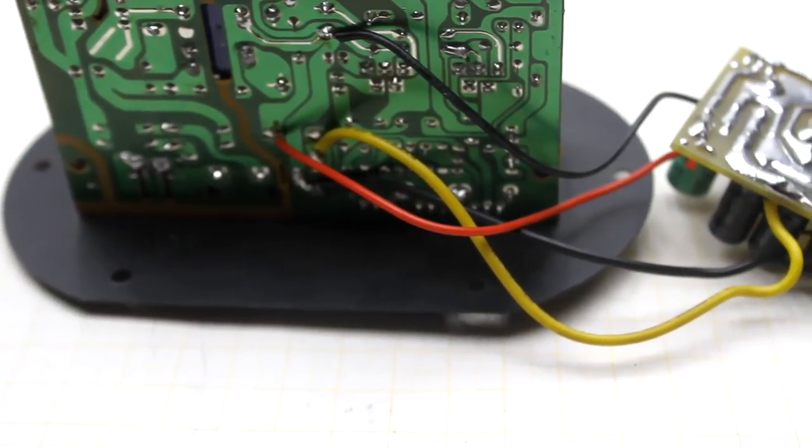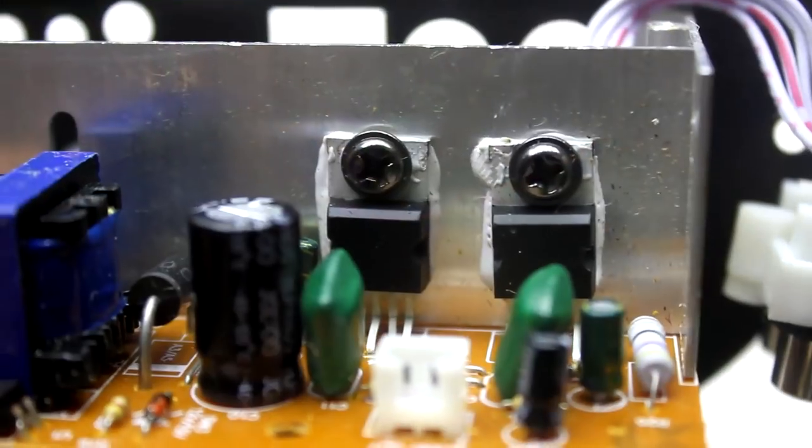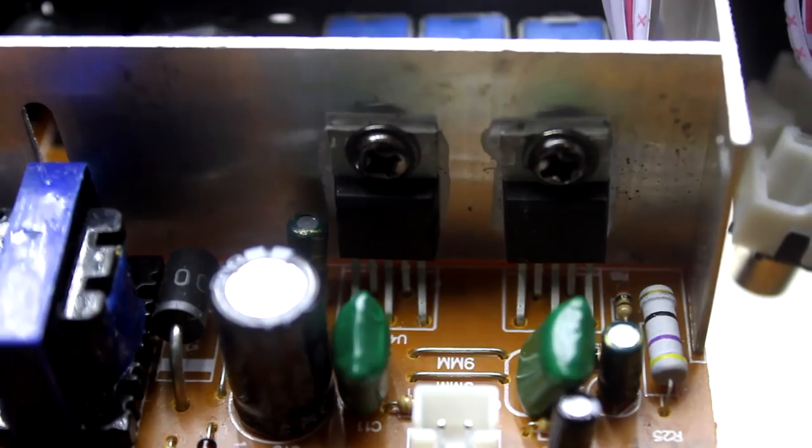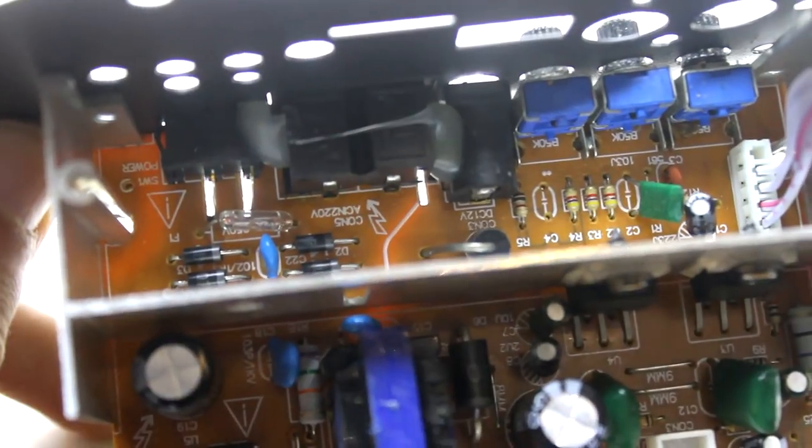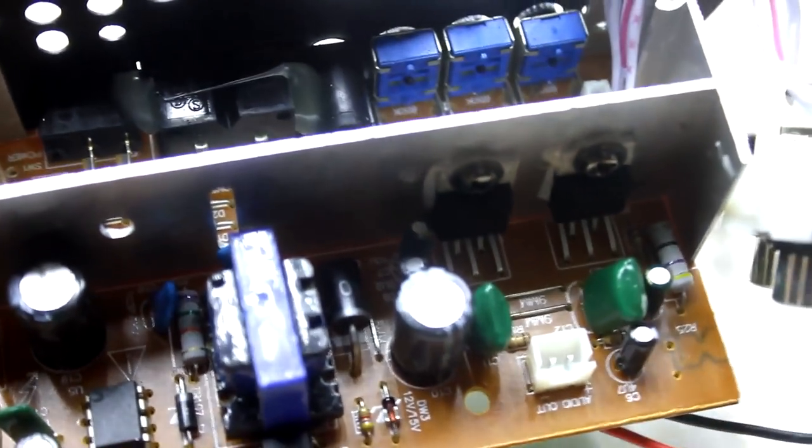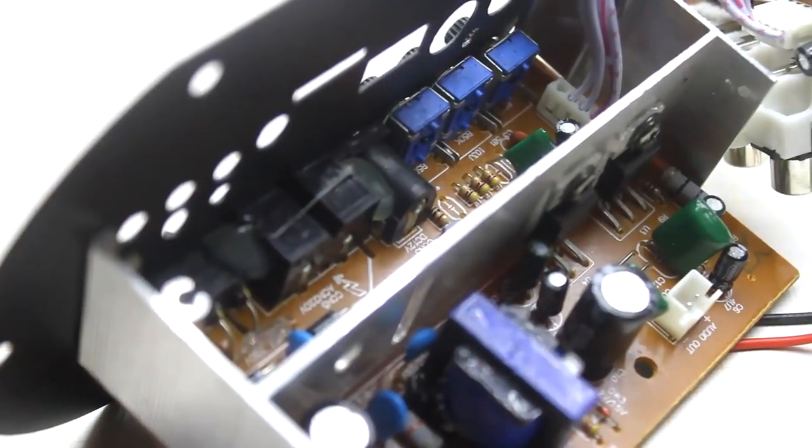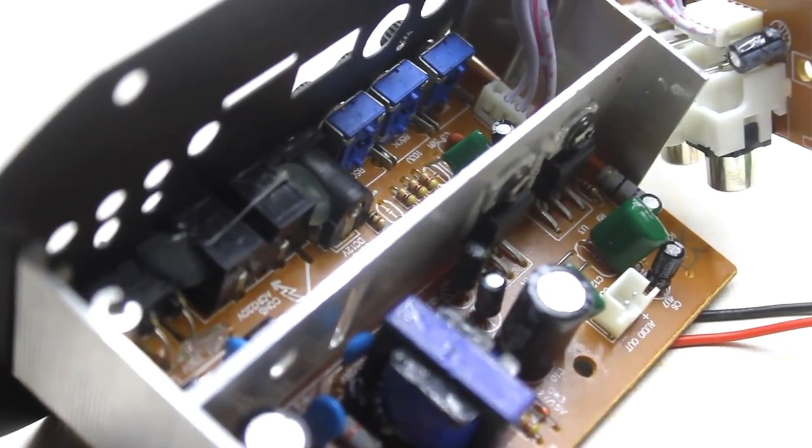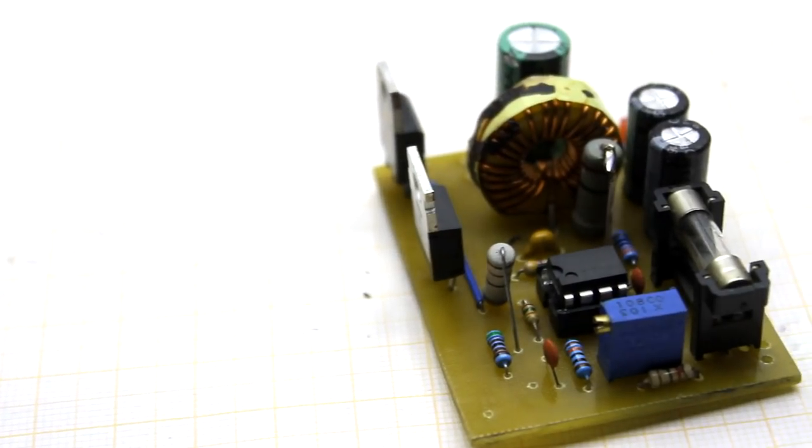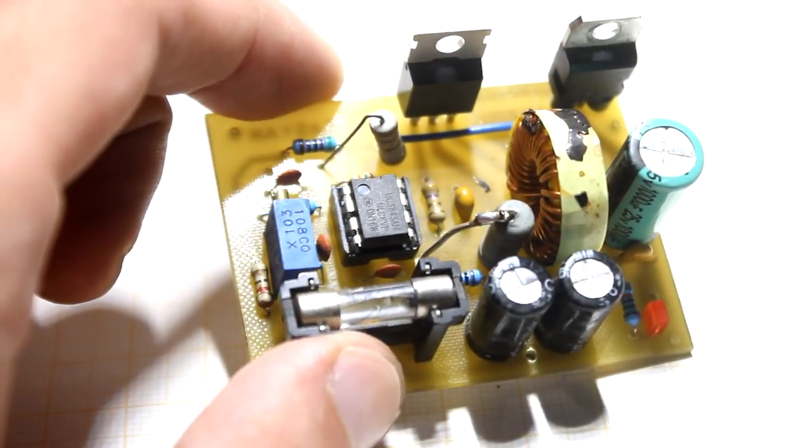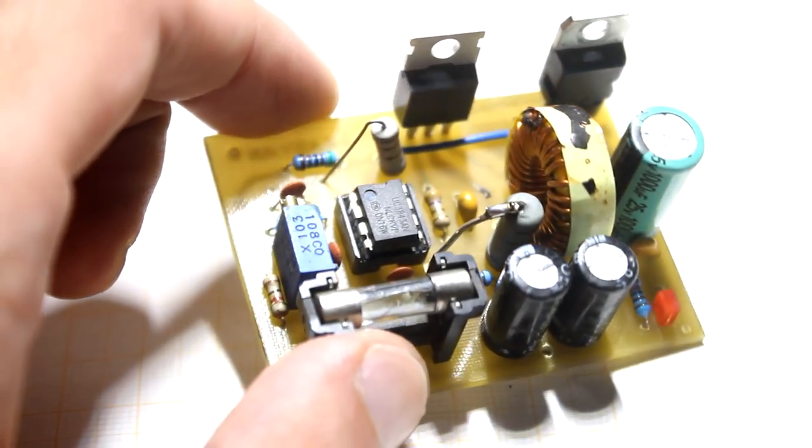The second option is less humane, but working. According to the datasheet on the TDA2003 chip, you can power it up to 18 volts. At least this voltage is safe for them. And the higher the supply voltage, the greater the output power. In past videos I made a converter from 12 to 18 volts. It was created just for this purpose.